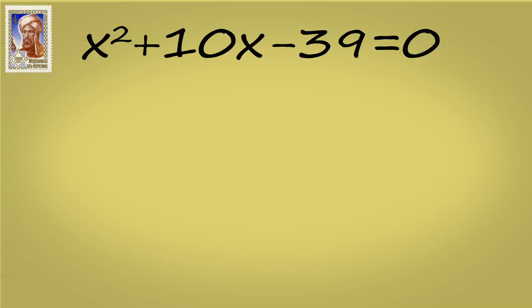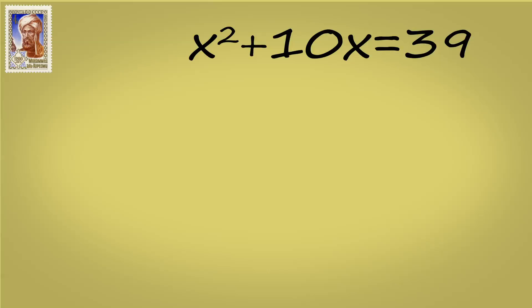So what he did, since he is the algebra kind of guy, he actually added 39 to both sides. Boom. And then he thought of something a little different. And he actually said, all right, well, x squared, that's the same thing as having a square with x as my length and my width.